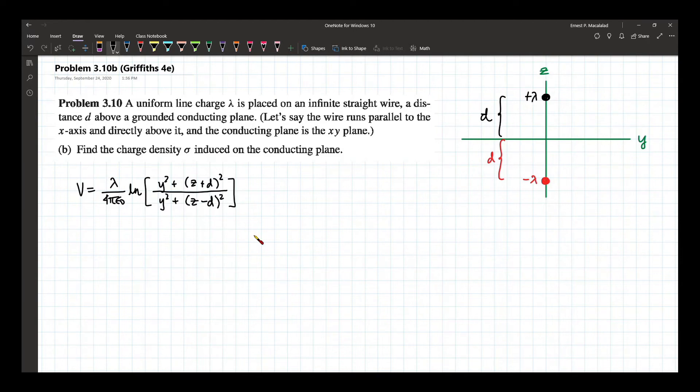Now the question is, find the charge density. So we already know that the surface charge density induced in this conducting plane, located in the x, y plane, is given by negative epsilon times the derivative of the potential with respect to the normal direction. In this case, the normal direction would be the z direction. And then we are going to evaluate this on the position where the conducting plane is located. In this case, z is equal to 0.